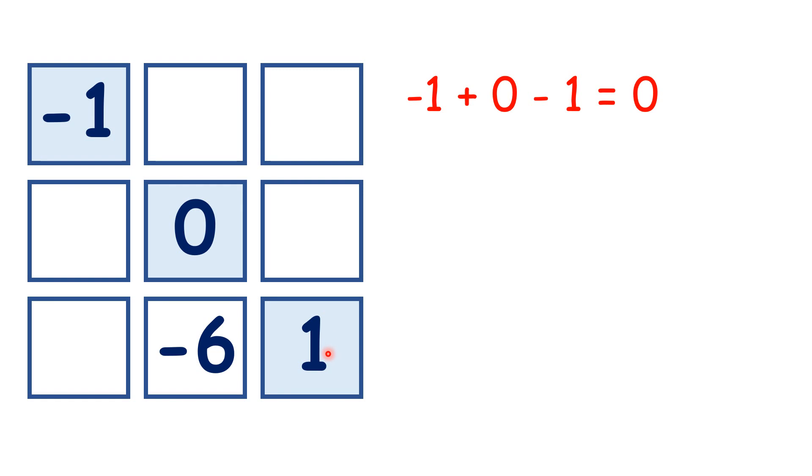So now for this question, there are two different places we could start, because we have two numbers in this bottom row, but we also have two numbers in the middle column. So let's start here. We have our missing number here, and if we add 0 and take away 6, we get 0, because remember, we've already worked out that all lines must total 0. So our number must be 6.